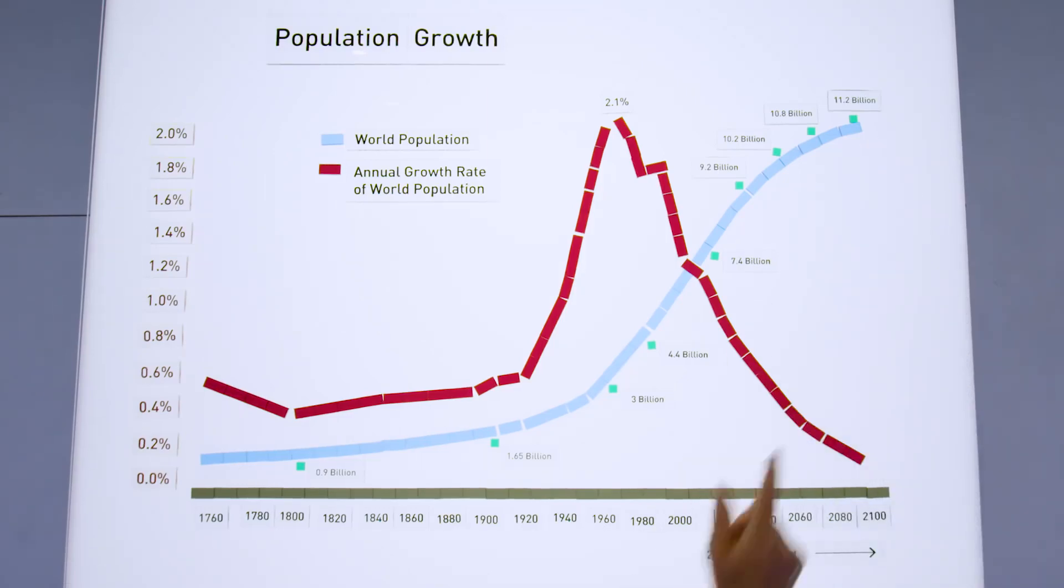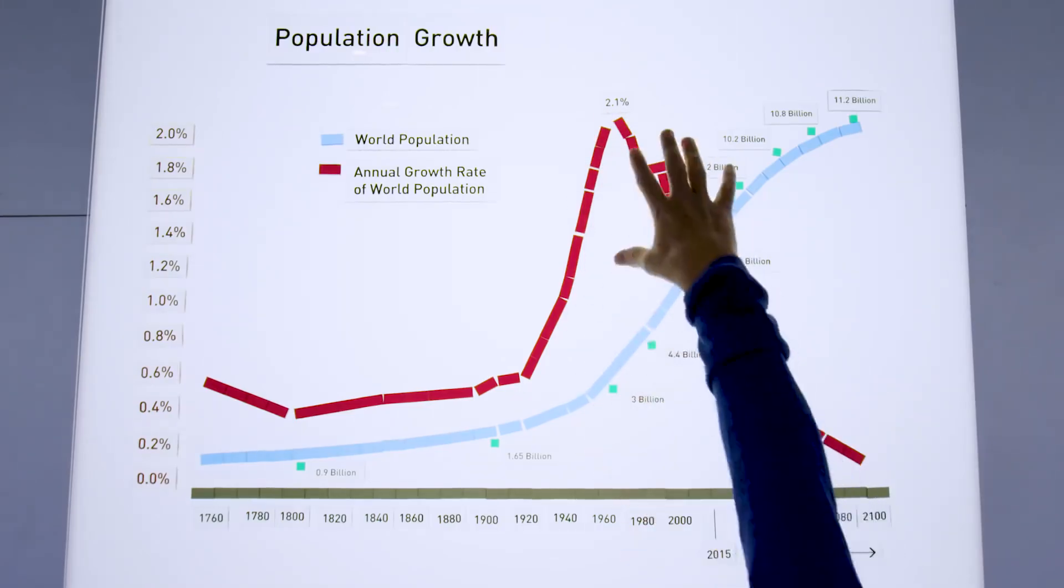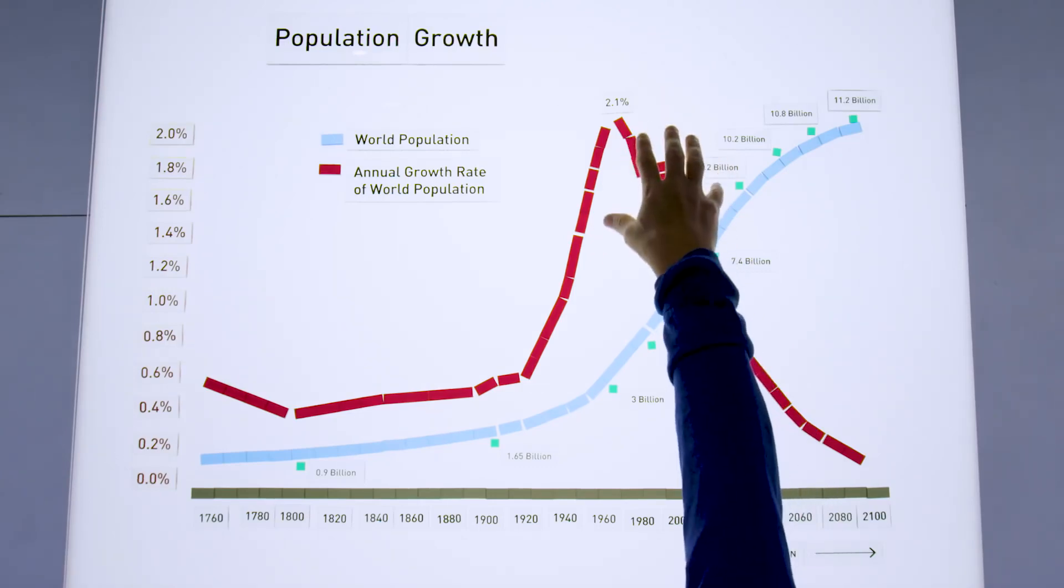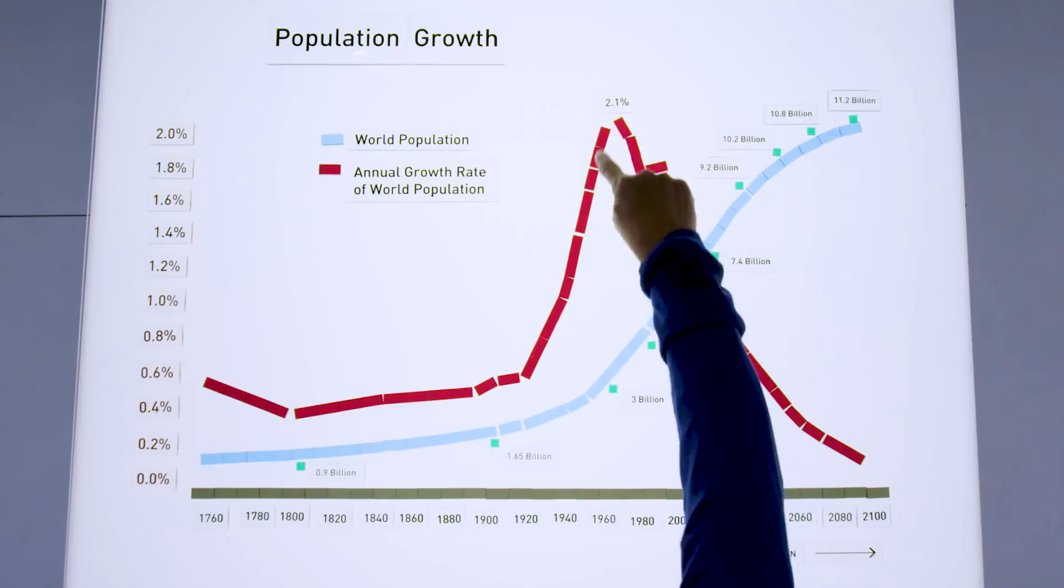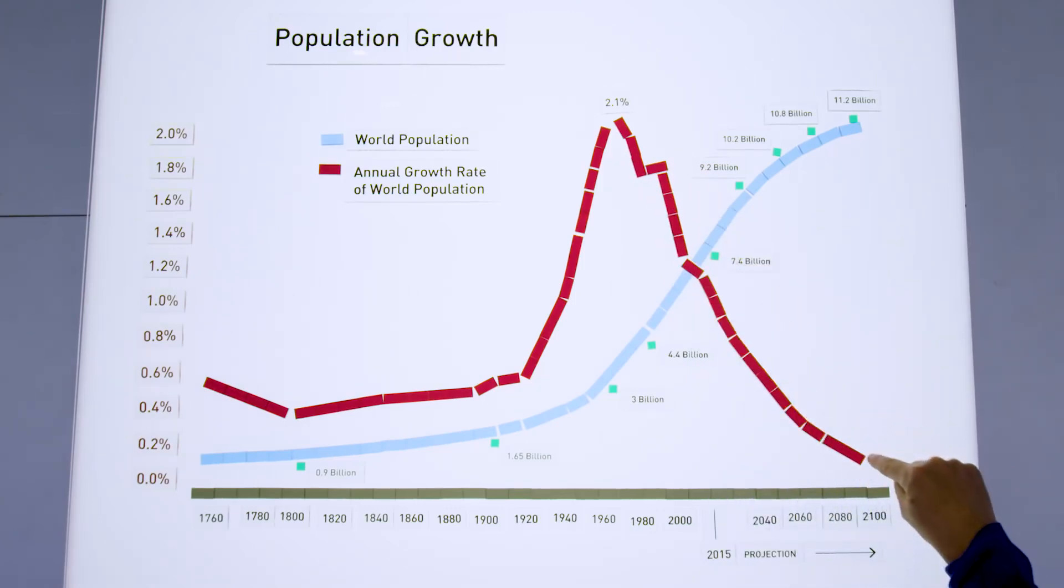Another way to see that is through this rate of population growth. And you can see that in the 60s, that reached a pretty high number, over 2% per year. And it's now come way down.